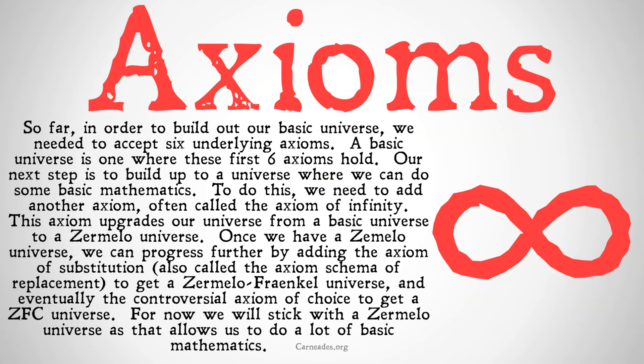So far, in order to build out our basic universe, we need to accept six underlying axioms. A basic universe is one where these first six axioms hold. Our next step is to build up to a universe where we can do some basic mathematics. To do this, we need to add one more axiom, often called the axiom of infinity.